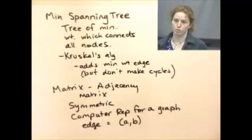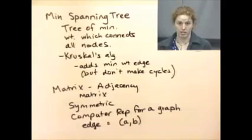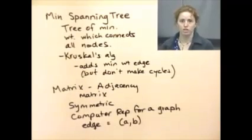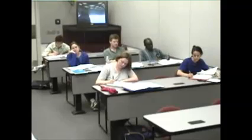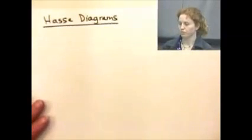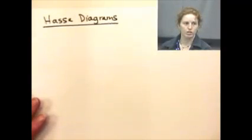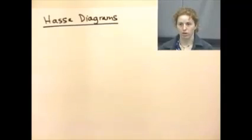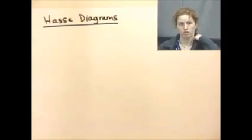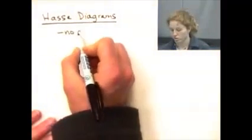The last part of graph theory is Hasse diagrams, which we already did when we talked about binary relations. A Hasse diagram represents a partially ordered set. What we do is take a graph for a relation and rearrange it so we don't need any arrows — it has no loops and transitive edges are removed.